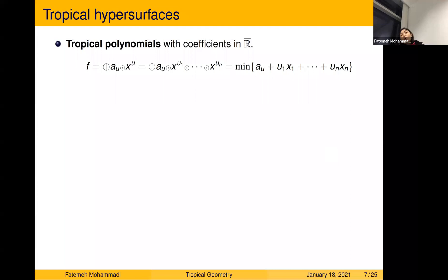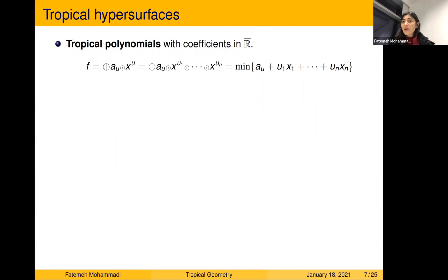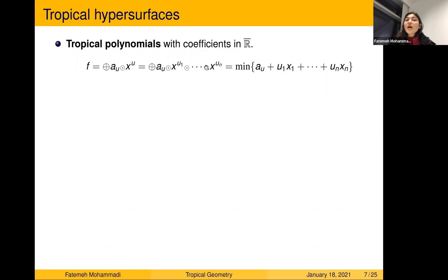Tropical polynomials are defined as a tropical sum of terms, where each term has a coefficient from the tropical semi-ring — either a real number or plus infinity — times monomials x to the u, where the exponent is an integer vector u = (u₁, …, uₙ). That is, x^u means x₁^{u₁} · x₂^{u₂} · … · xₙ^{uₙ}. Taking the tropical sum, we can write this in usual arithmetic as the minimum of a family of linear functions of the form aᵤ + u₁x₁ + … + uₙxₙ.